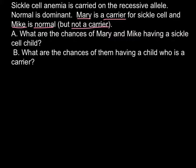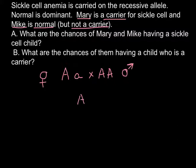We know that Mary is a carrier, so one allele should be normal and one should be recessive. Mike would be normal for both alleles. We put the sign for the male here and the sign for the female here, and we place their genotypes on either side of the Punnett square.